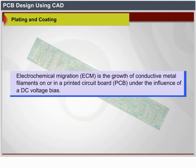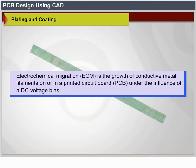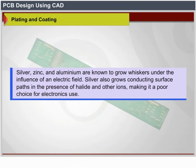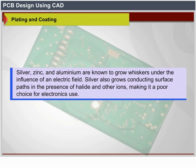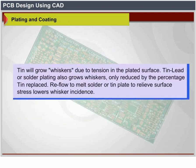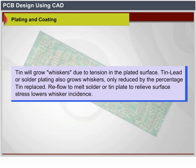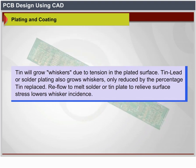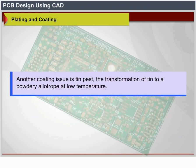Electrochemical Migration (ECM) is the growth of conductive metal filaments on or in a printed circuit board under the influence of DC voltage bias. Silver, zinc, and aluminum are known to grow whiskers under the influence of an electric field. Silver also grows conducting surface deposits in the presence of halide and other ions, making it a poor choice for electronic use. Tin will grow whiskers due to tension in the plated surface; tin, lead, or solder plating also grows whiskers, only reduced by the percentage of tin replaced. Reflow to melt solder or tin plate to relieve surface stress lowers whisker incidence. Another coating issue is tin pest — the transformation of tin to a powdery allotrope at low temperature.